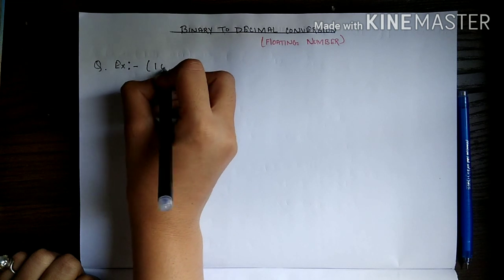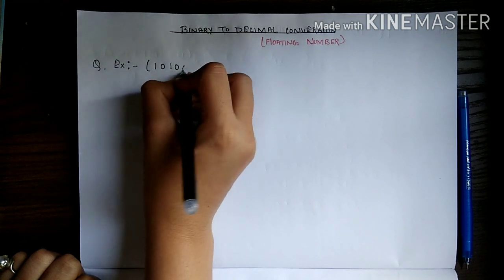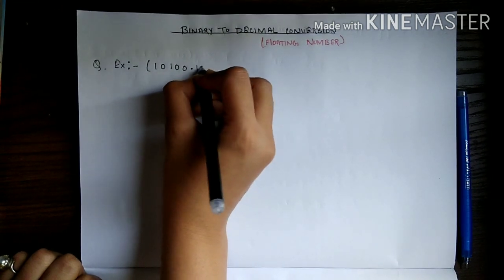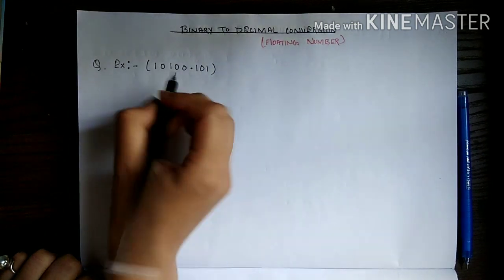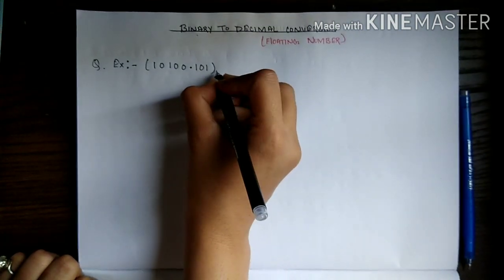The number is 1 0 1 0 0 . 0 0 1 0 1, which is in binary form.